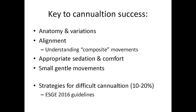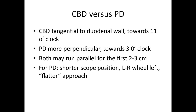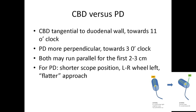When we think about selective cannulation of the common bile duct versus the pancreatic duct, we need to understand that the common bile duct runs tangential or almost parallel to the 11 o'clock position, whereas the pancreatic duct is more perpendicular aiming towards 3 o'clock, and both may run parallel for the first few centimetres. To selectively cannulate the pancreatic duct we often need a shorter scope position — the small left-right wheel needs to be turned left and we need to adopt a shorter or flatter approach to the papilla.